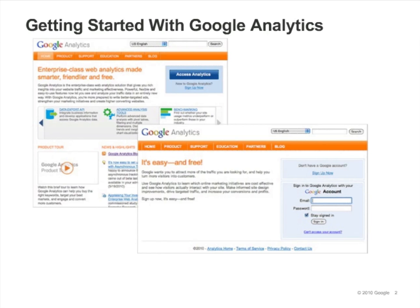Get started with Google Analytics in three simple steps. First, sign up for a Google Analytics account. Second, install the provided code across all pages of your site. Third, if you're using Google AdWords, link it to your Google Analytics account to report on cost and click data.